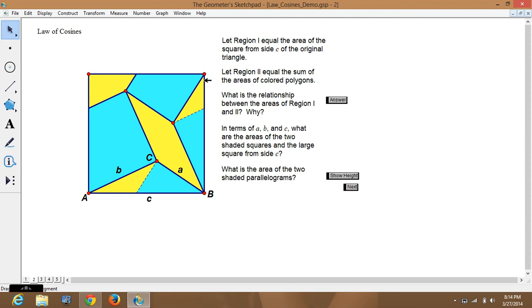In terms of A, B, and C, what are the areas of the two shaded squares and the large square from side C? They're both equal. So, I'm going to look at this parallelogram here. I know that this is B squared, this blue one with this piece. And that this is A squared when you add this piece. And then I have two of these parallelograms that represent the yellow pieces. Okay? And you need to know that the area of a parallelogram is base times height.